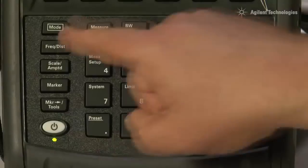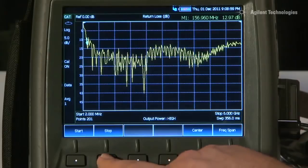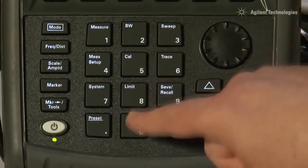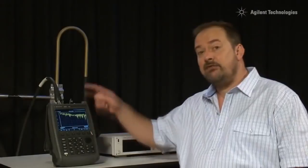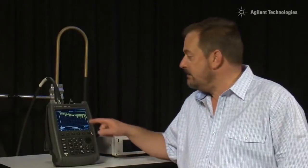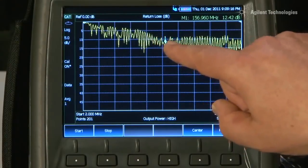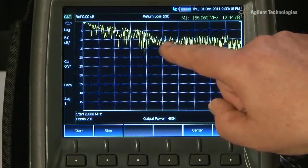Now, this antenna we know is tuned to around 157 MHz in the VHF marine band. So let's press Frequency and set a stop of say 300 MHz. So the resonant frequency of the antenna should be somewhere in the middle of the screen. And you can see there is sort of a dip in the return loss there.